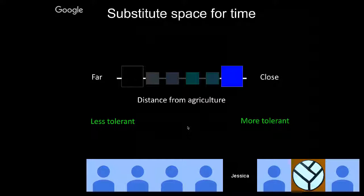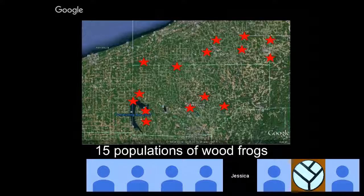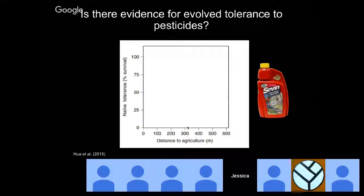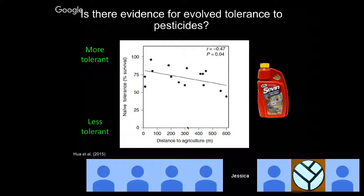We went to 15 populations of wood frogs, collected egg masses, reared them in common conditions until tadpoles, then exposed them to a lethal concentration of carbaryl — a very common insecticide available at Walmart. We found a significant negative relationship: those close to agriculture were more tolerant to carbaryl than those far from agriculture. We also found variation in susceptibility across populations, which allowed us to ask about the costs of evolved tolerance.